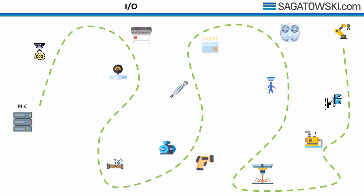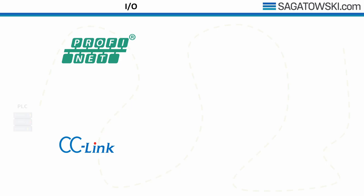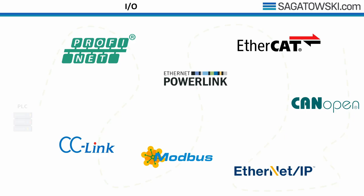A fieldbus can be implemented in a wide variety of ways and there are many different ones. A few of the more popular ones are Profinet, CC-Link, Modbus, Powerlink, EtherCAT, EtherNet/IP, and CANopen. In this part I will focus on EtherCAT, as this is the de facto fieldbus in Beckhoff PLCs. It was invented by Beckhoff and real-time drivers for it are included by default in every Beckhoff PLC.